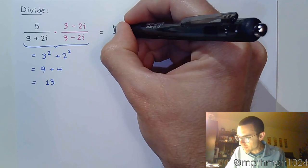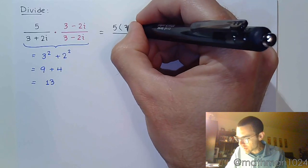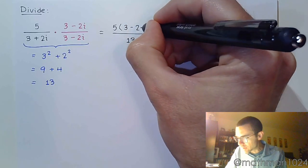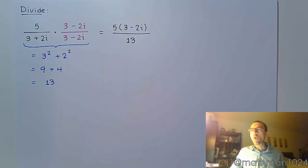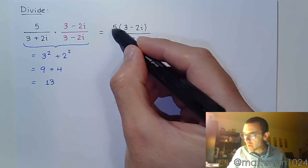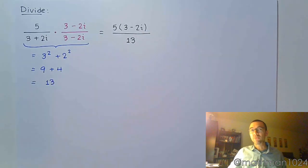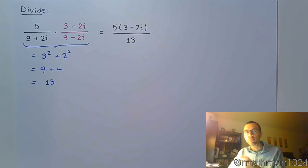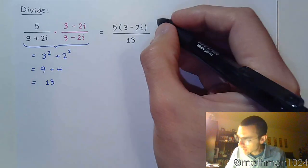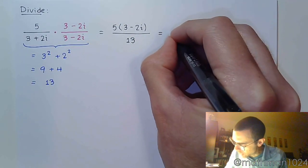In the numerator, we would have 5 times 3 minus 2i. You're probably asking, why didn't you go ahead and distribute that? A lot of times I pause just in case there are common factors that can reduce, because if I can reduce that, that means less work for me later on. But 5 and 13 don't reduce, so I need to go ahead and distribute it in the numerator.